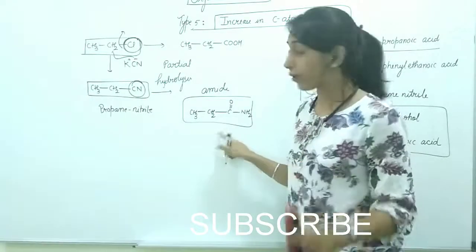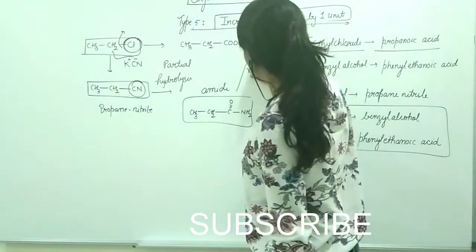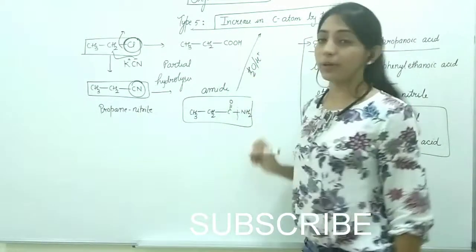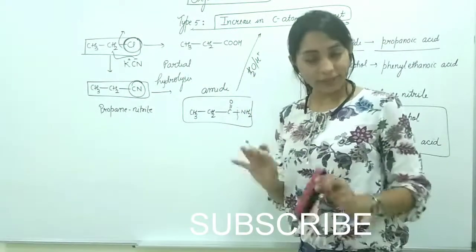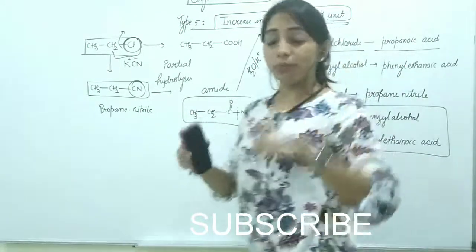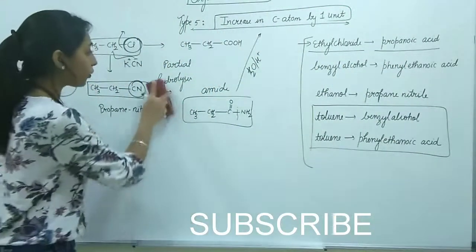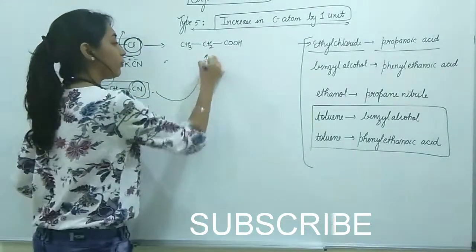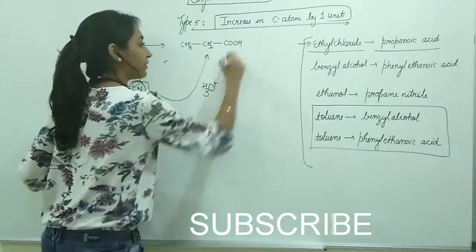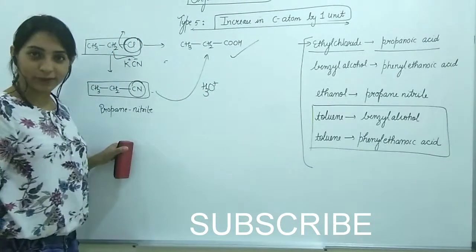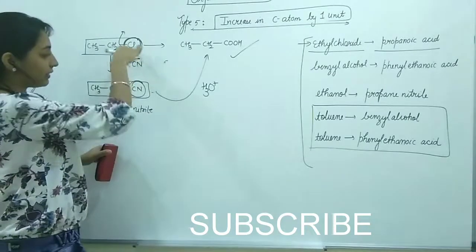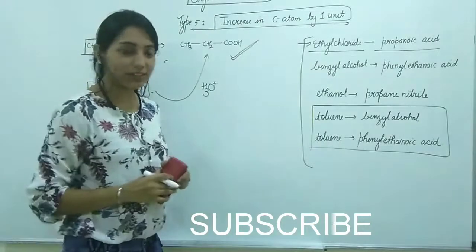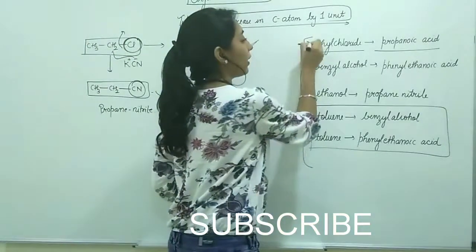But if you want complete hydrolysis, add more water. If you do acidic hydrolysis with H3O+, the amine group goes away and it becomes carboxylic acid. So first go from Cl to CN, then CN to COOH through hydrolysis. I hope this question is clear. This was question number one.